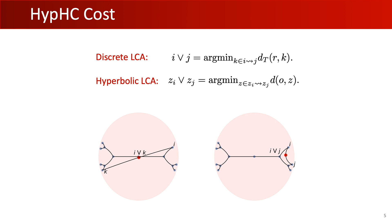Using this LCA formulation, we can derive a continuous relaxation of Dasgupta's cost, which can be optimized with gradient descent on the leaves embeddings.